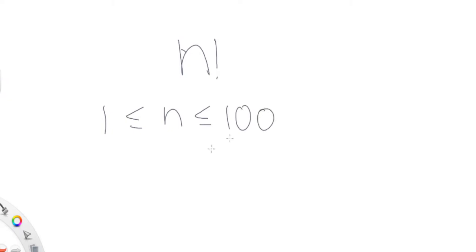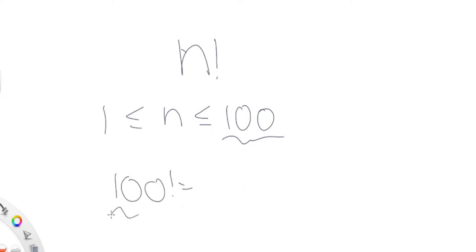The problem with this problem is that n is between 1 and 100. And this is a problem because at the last value of 100, if I do 100 factorial, I'm going to get an overflow. So that's not a good idea — if you get an overflow, this is a huge problem.